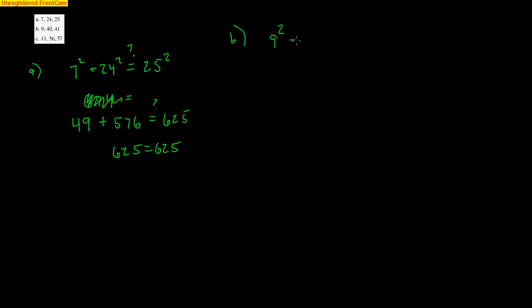Here, we got 9 squared plus 40 squared equals 41 squared. And I can use my calculator. 9 squared plus 40 squared is 1681. And is 41 squared 1681? Yes, it is. So it looks like we have another set of Pythagorean triples there.